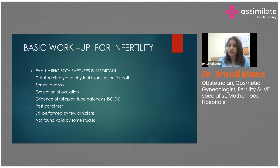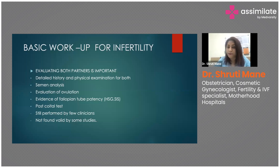Semen analysis allows 90% of male fertility parameters to be diagnosed with a simple test. As per WHO 2021 criteria, normal values include: minimum volume of 1.5 ml, count of 16 million per ml, progressive motility greater than 32%, and normal morphology greater than 4%.